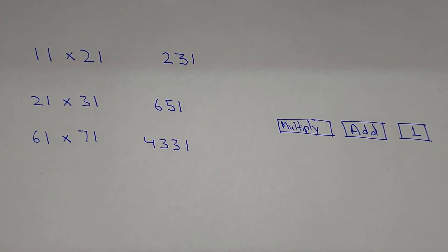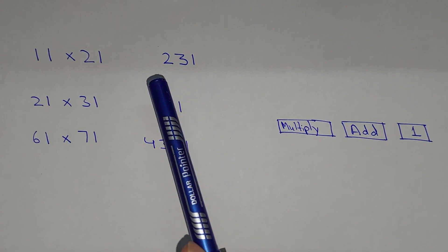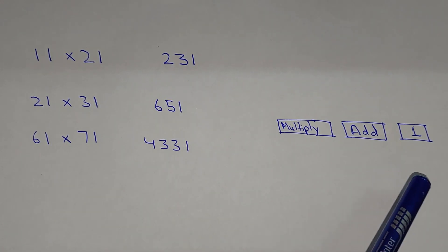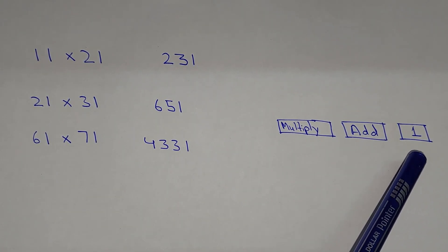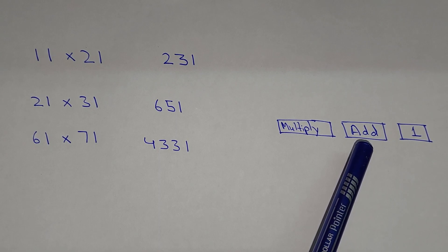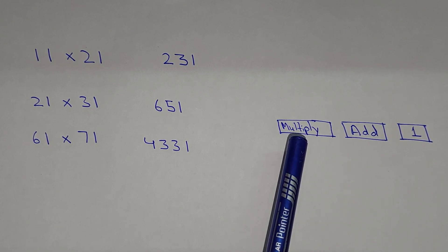Hello, what's up guys? Welcome to the new video. In this video we will learn about the multiplication of numbers ending with one. So it is a short trick and the answer goes from right to the left. In the first step we write one, in the second step we add, and in the third step we multiply.